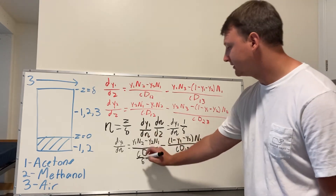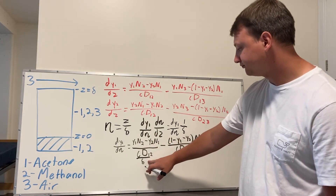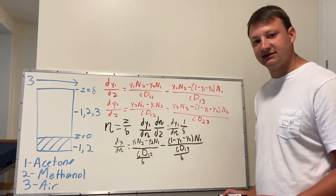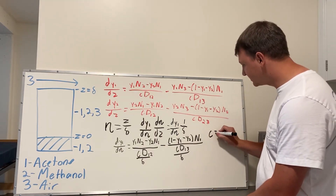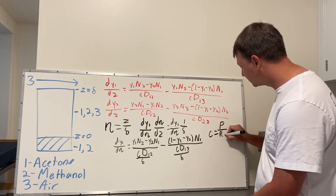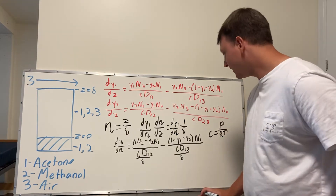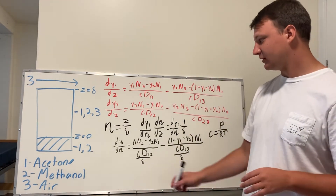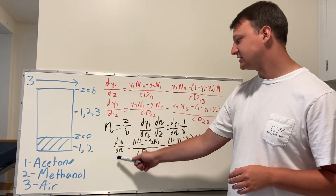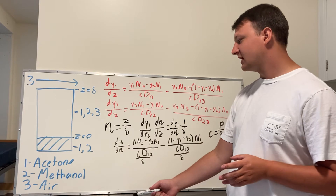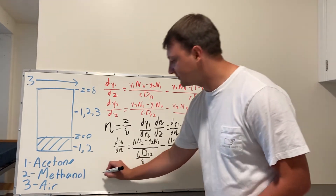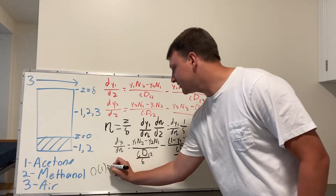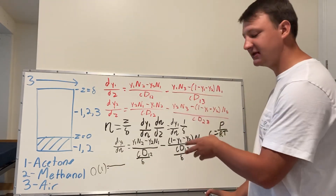We're going to look at the bottom portion — concentration times the diffusion constant over delta — to make things easier. First, remember that the concentration is equal to pressure over the gas constant R times temperature. We're going to look at the left part of the equation: since we know that the molar fraction is first order and eta is also first order, the derivative on the left is also going to be first order.